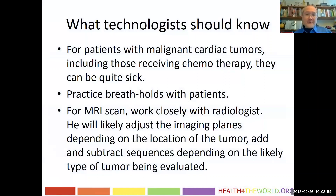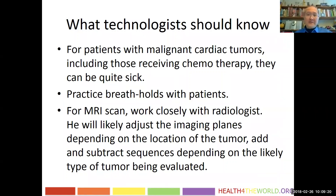The first thing we need to appreciate is that for a patient with a malignant cardiac tumor, including those receiving chemotherapy, they can be quite sick. If I had a choice between CT and MRI, I would definitely prefer MRI. The reason is that MRI has a lot more flexibility to characterize the tissue features of the tumor, allowing a pretty good guess at cell types. On the CT side, we can very rarely do that — most of the time we just get an anatomic map of where the mass is, what it's close to, and what structures it's in contact with.